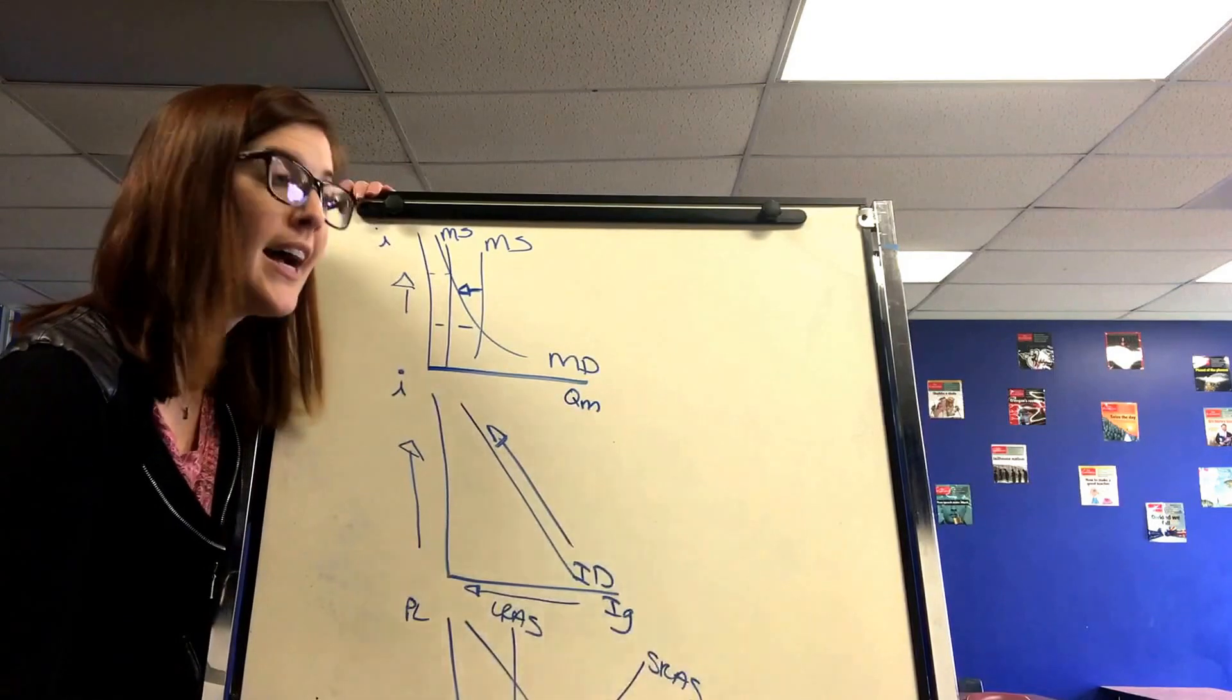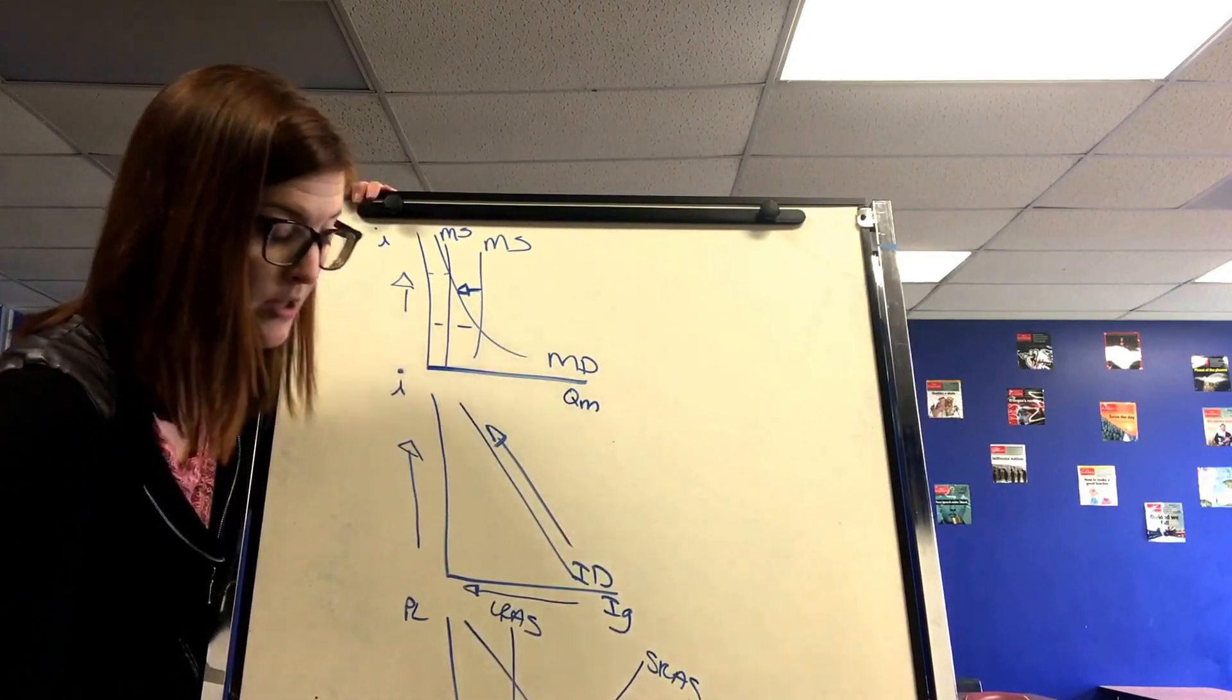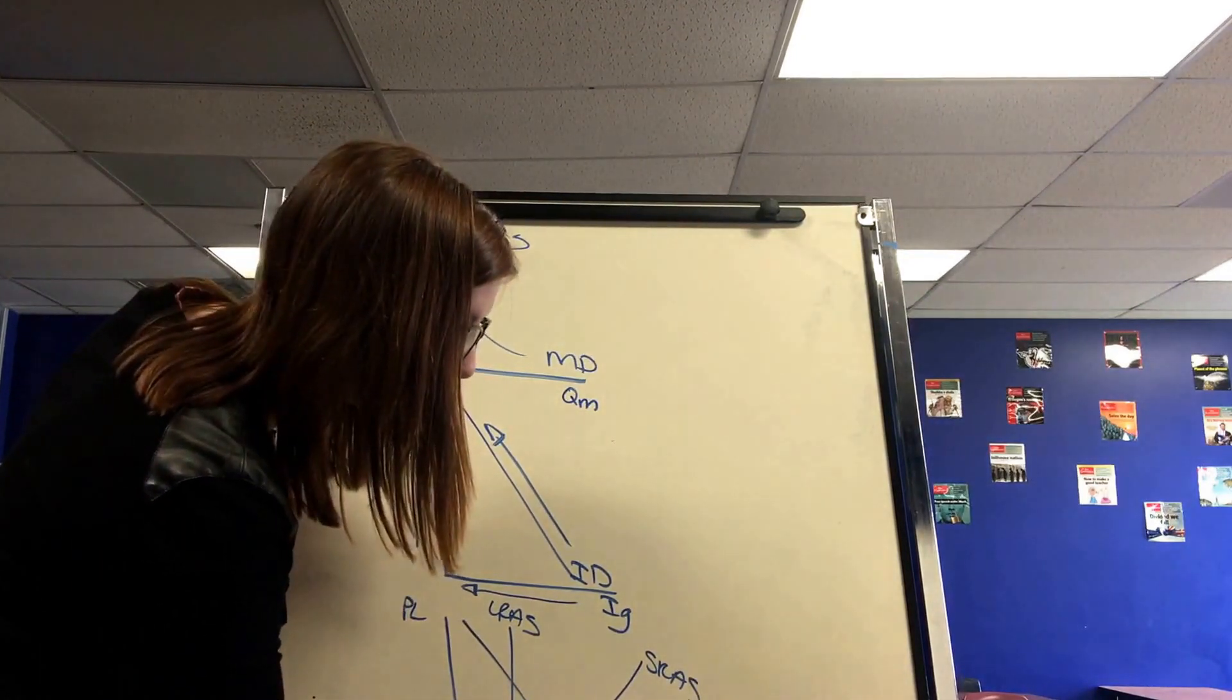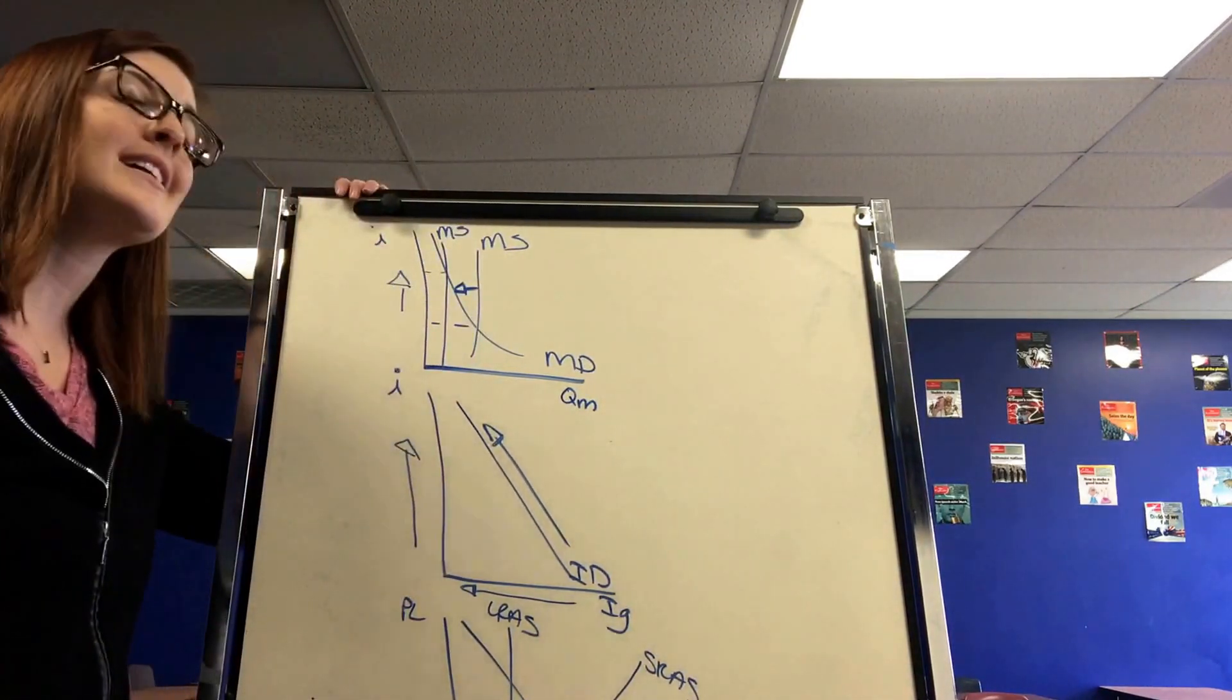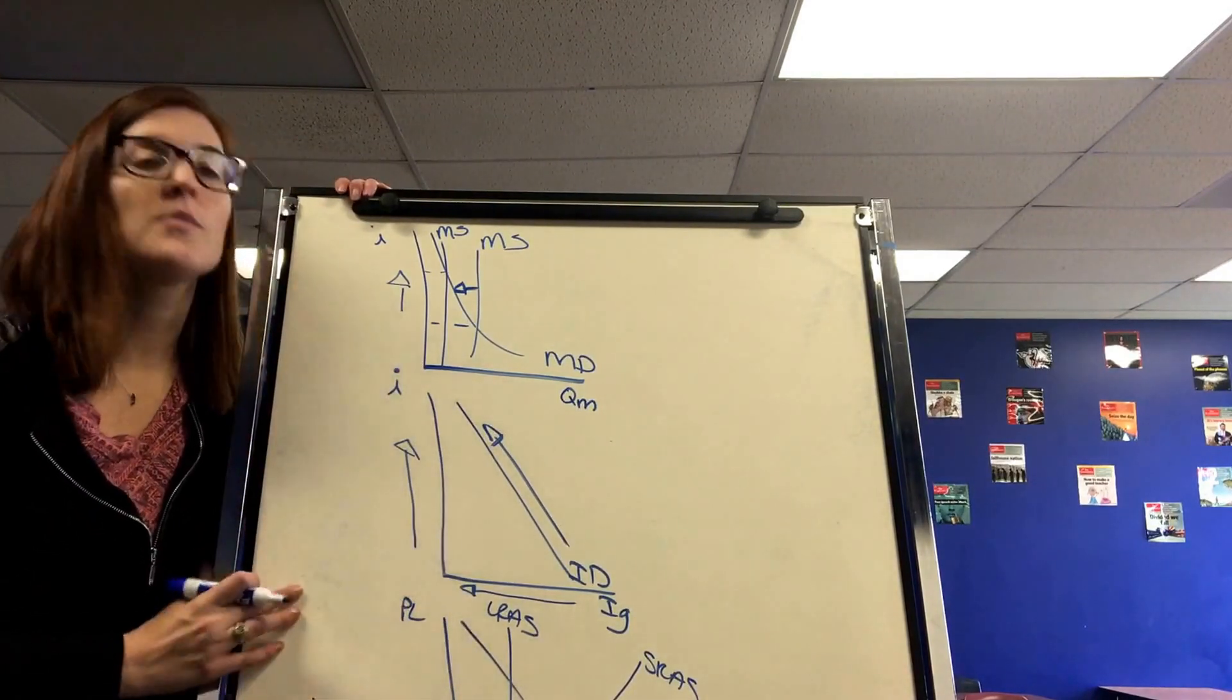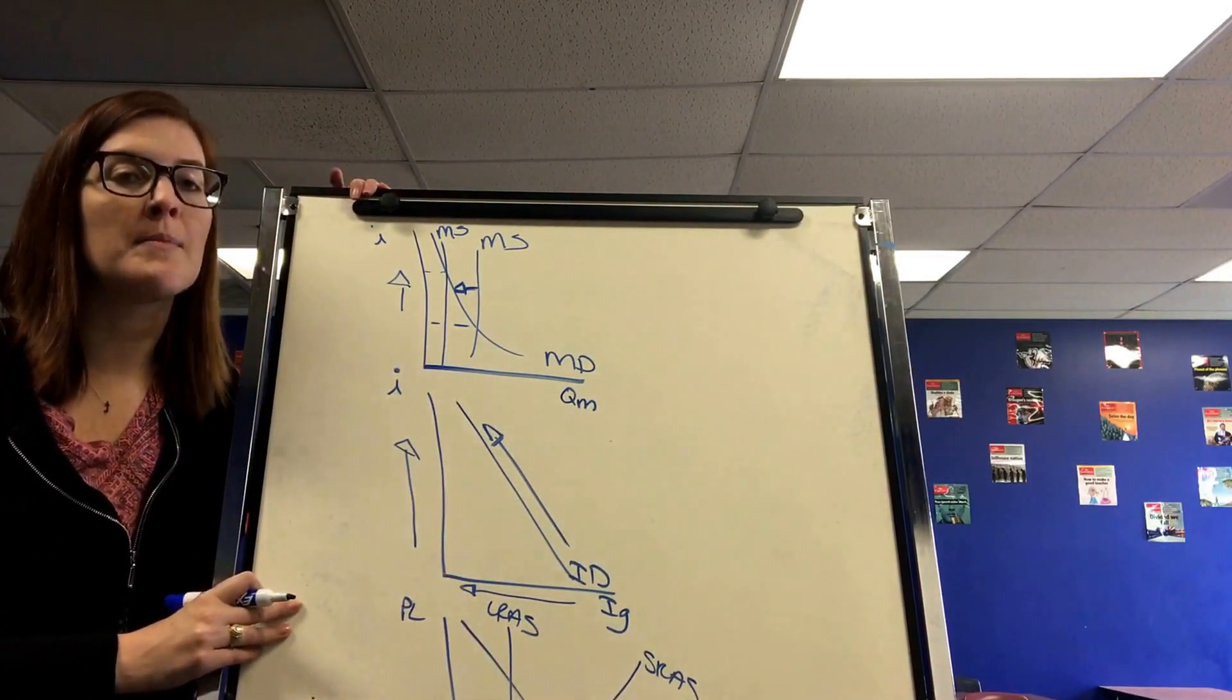This means real wealth is higher and consumers don't have to pay as much for goods. But it also means that GDP will decrease and it will create some unemployment, which is seen as a necessary evil to fight inflation. So this is the process with contractionary and expansionary monetary policy.